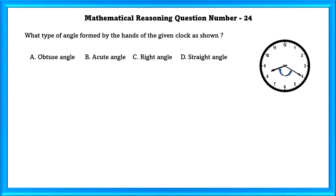Mathematical reasoning question number 24. What type of angle is formed by the hands of the clock as shown? This angle forms an obtuse angle.